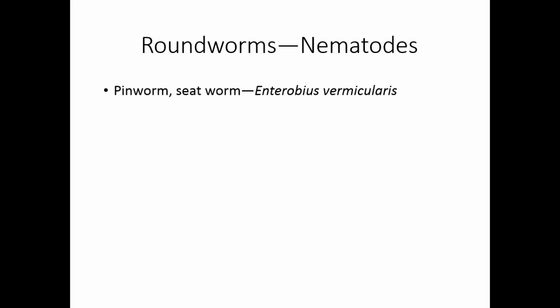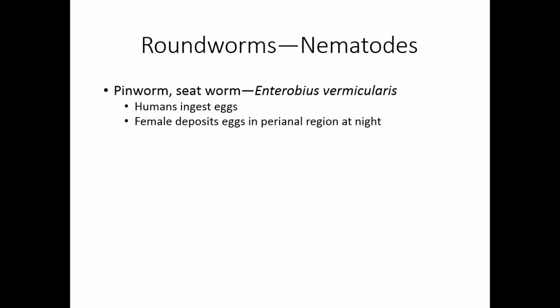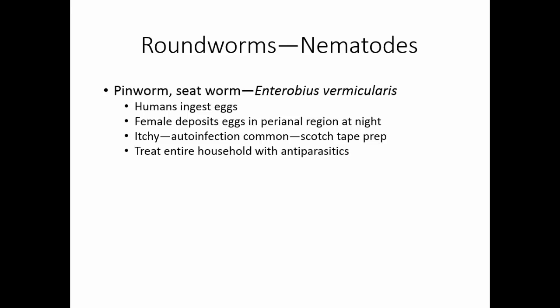Roundworms are also known as nematodes. The pinworm or seatworm is Enterobius vermicularis, with humans as the only known host. Humans ingest the eggs; the female lives in the large intestine and comes out at night to deposit eggs in the perianal region, causing itching. Children scratch and then put their fingers in their mouths, making auto-infection common. Diagnosis is by pressing scotch tape to the perianal area and examining it under a microscope for eggs. If one person is found to have pinworm, the entire household is treated with antiparasitics — usually one dose, then a second dose two weeks later. Since the lightweight eggs spread throughout the house, everyone in the household is likely exposed. The good news is eggs become non-infective after a week.